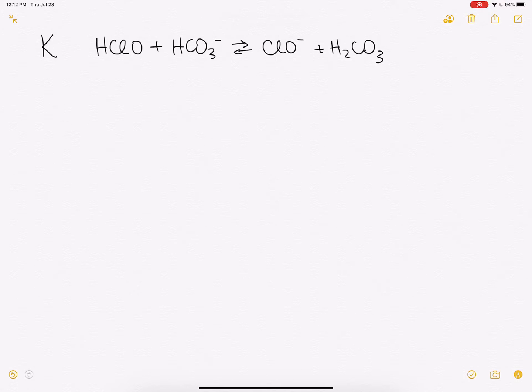So we want to find the K for this overall reaction, and they've given us some information. They gave us for HClO, the Ka is 3.5 times 10 to the minus 8th, and for H2CO3, they gave us both Ka's. Ka1, 4 times 10 to the minus 7, and Ka2, 4.7 times 10 to the minus 11.